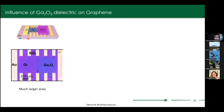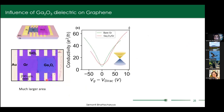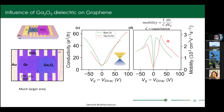The conductivity as a function of gate voltage shows the green data line for bare graphene and the red data line for gallium oxide–covered graphene. We do not see any dramatic reduction of mobility that has been reported in all previous experimental data — this is quite remarkable. When we looked at the mobility of these devices, we found that in a certain gate voltage range, the mobility in gallium oxide–covered graphene even marginally surpasses the bare graphene. As far as we know, this is the first time someone encapsulated graphene with a high-K dielectric material without any mobility reduction.